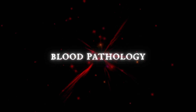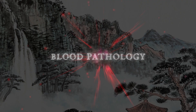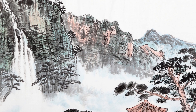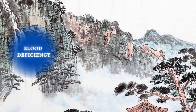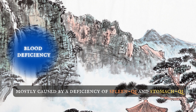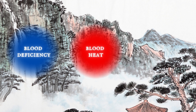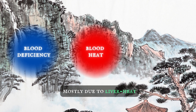Finally, let's talk about blood pathology. There are three basic cases of the pathology of blood. First, blood deficiency: blood can be deficient when not enough is manufactured, mostly caused by a deficiency of spleen qi and stomach qi. Secondly, blood heat: this is mostly due to liver heat. As the liver stores blood, liver heat or liver fire is transmitted to the blood, making it hot.